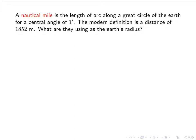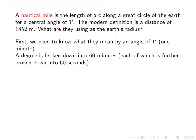Let's try another one. A nautical mile is the length of arc along a great circle of the Earth for a central angle of one minute. That tick mark stands for a minute. The modern definition is a distance of 1,852 meters. The question is, what are they using as the Earth's radius? We want to use s equals θr. This time we're looking for r. We know s is 1852, and we need to find θ. To find θ, remember, we need the angle in radians, and right now it's listed as a minute. Each degree is broken down into 60 minutes, which is broken down into 60 seconds.